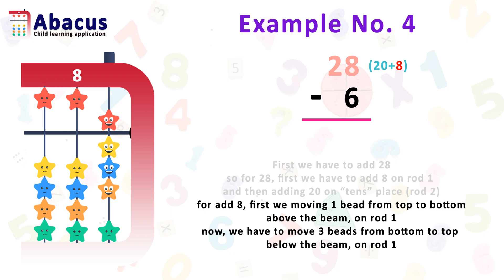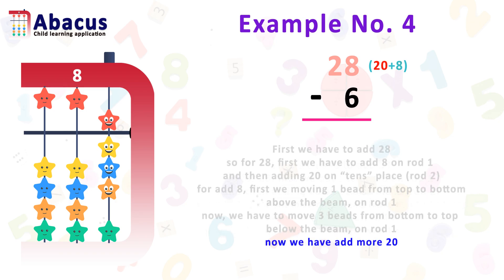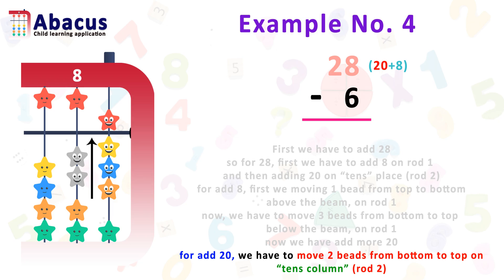Here we have added 8 on rod 1. Now we have to add 20 more. For 20, we move 2 beads from the bottom to the top on the 10th column, which is rod 2. Here we got 28.